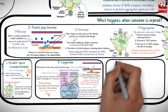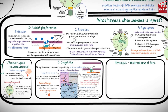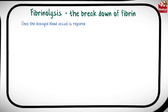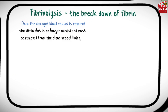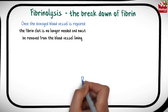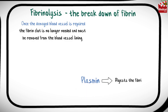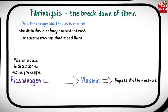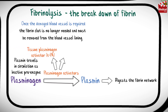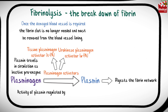Then comes the last step: fibrinolysis, the breakdown of fibrin. Once the damaged blood vessel is repaired, the fibrin clot is no longer needed and must be removed. This process of fibrinolysis or clot dissolution is accomplished by the enzyme plasmin, which digests the fibrin network. Plasmin travels in circulation as the inactive proenzyme plasminogen and is activated by factors produced by the liver and vascular endothelium called plasminogen activators. There are two types: tissue plasminogen activator (tPA) and urokinase plasminogen activator (uPA).